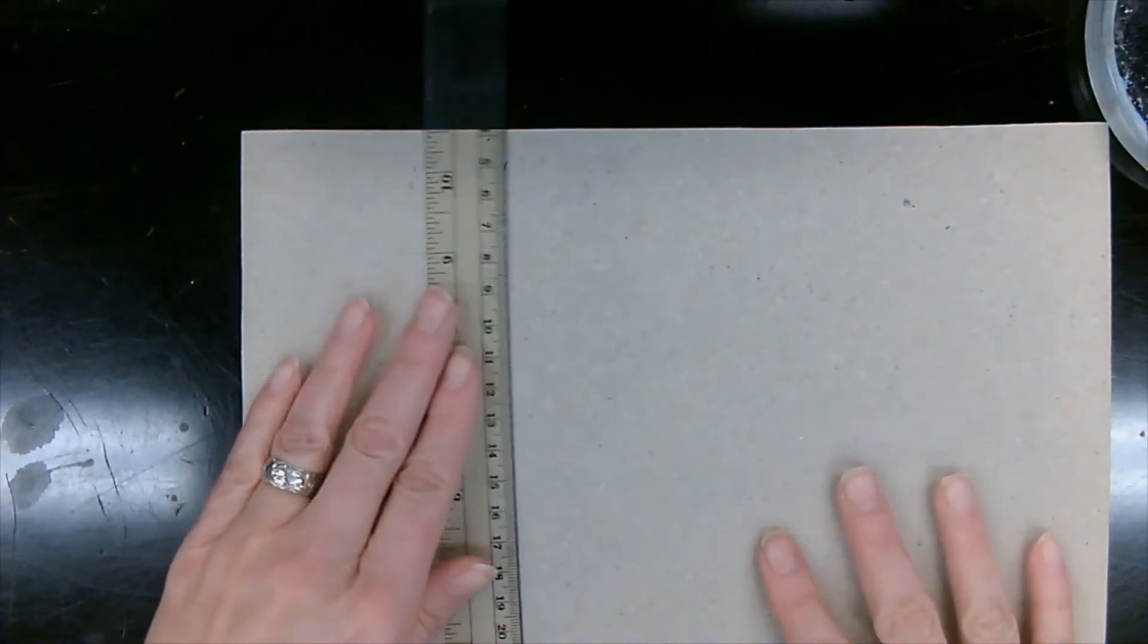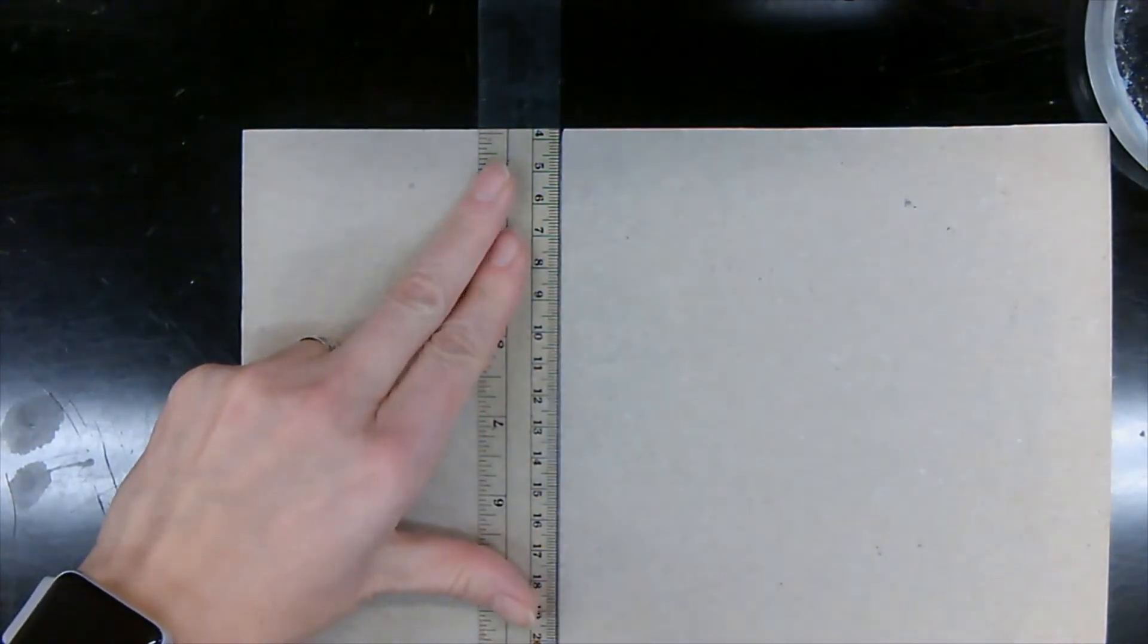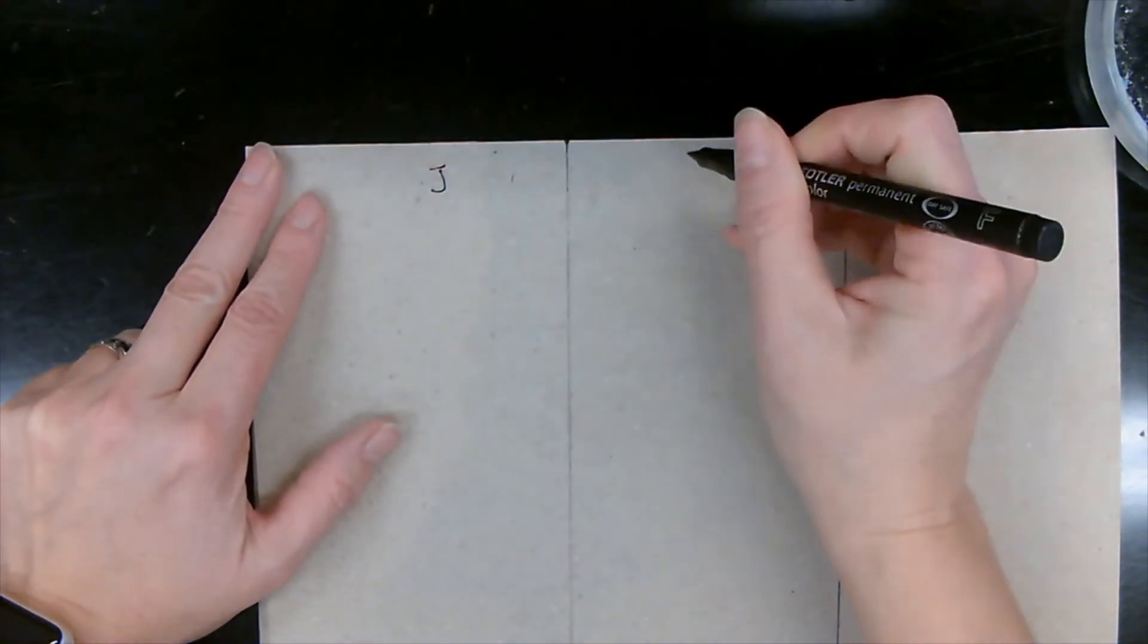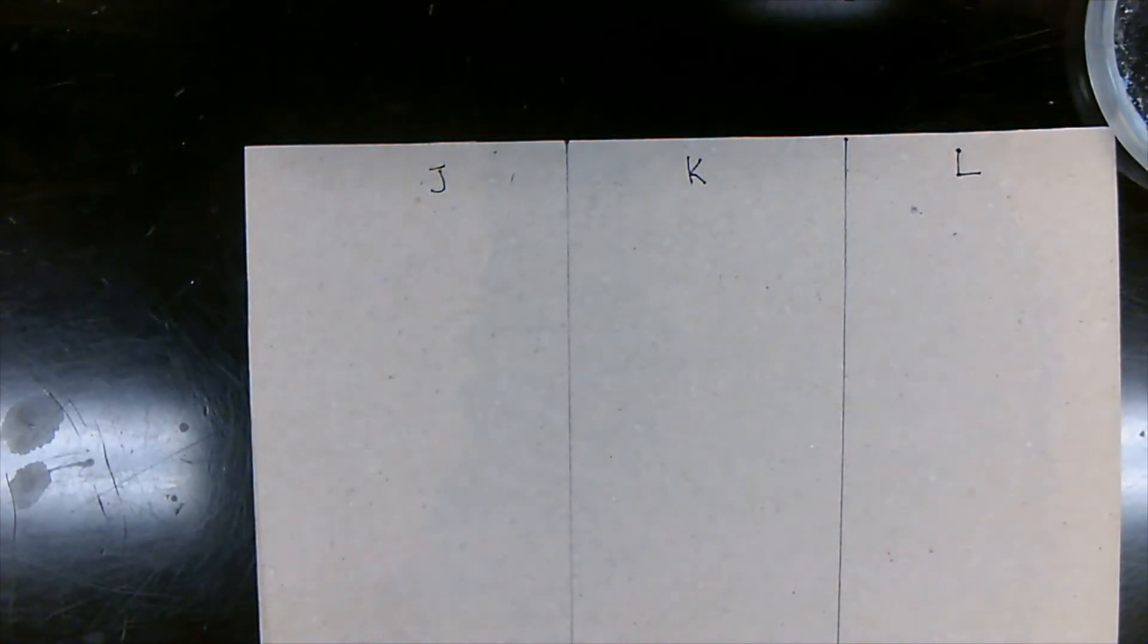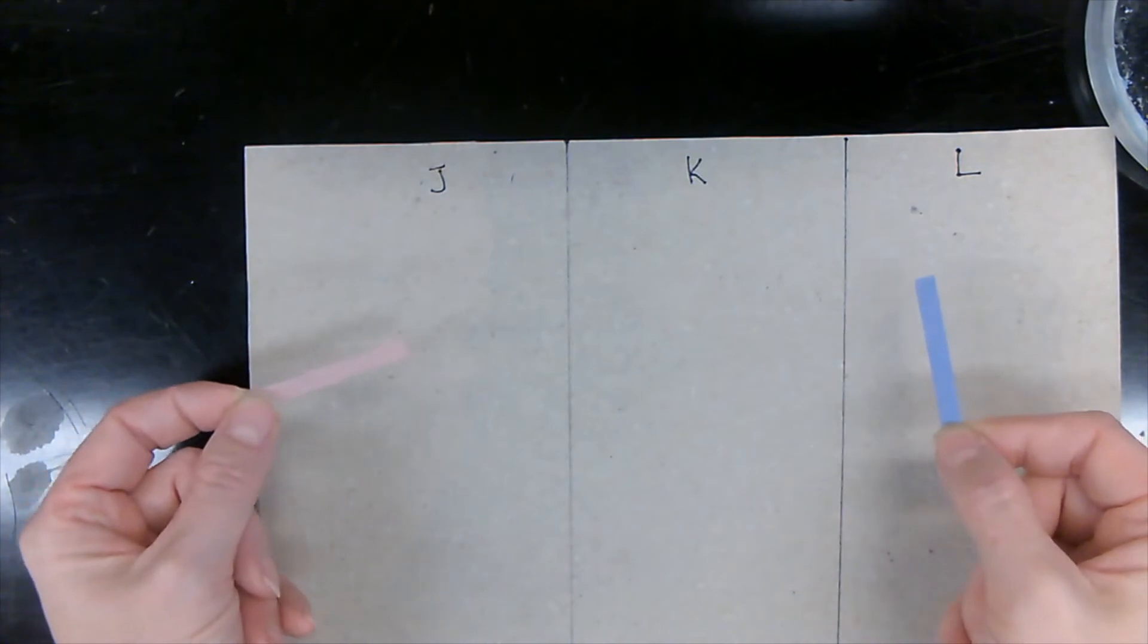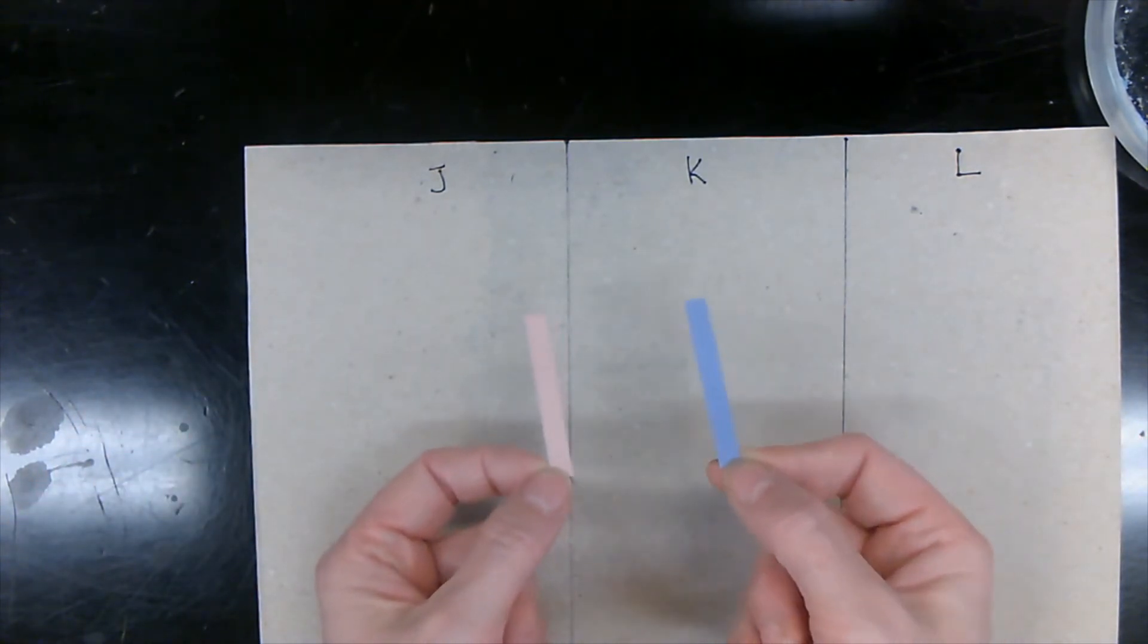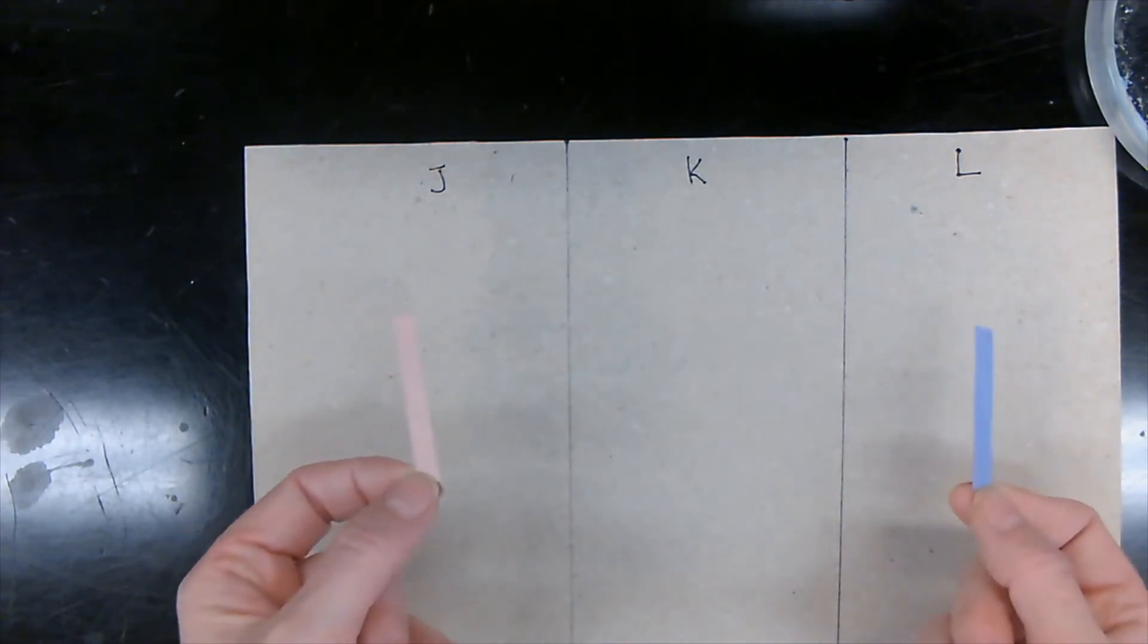So now let's do our litmus paper testing. We're going to divide this paper up into three. Litmus paper, red litmus paper, blue litmus paper. Again, litmus paper helps us identify if our salt is going to be an acid, a base, or neutral, and we need both of these papers. So let's cut them up and put them here.